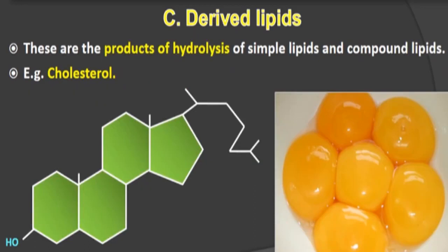Derived lipids are the products of hydrolysis of simple lipids and compound lipids. Hydrolysis means the chemical breakdown of a compound due to reaction with water. Simple and compound lipids react with water and break down, and the resulting products are called derived lipids. An example of a derived lipid is cholesterol.